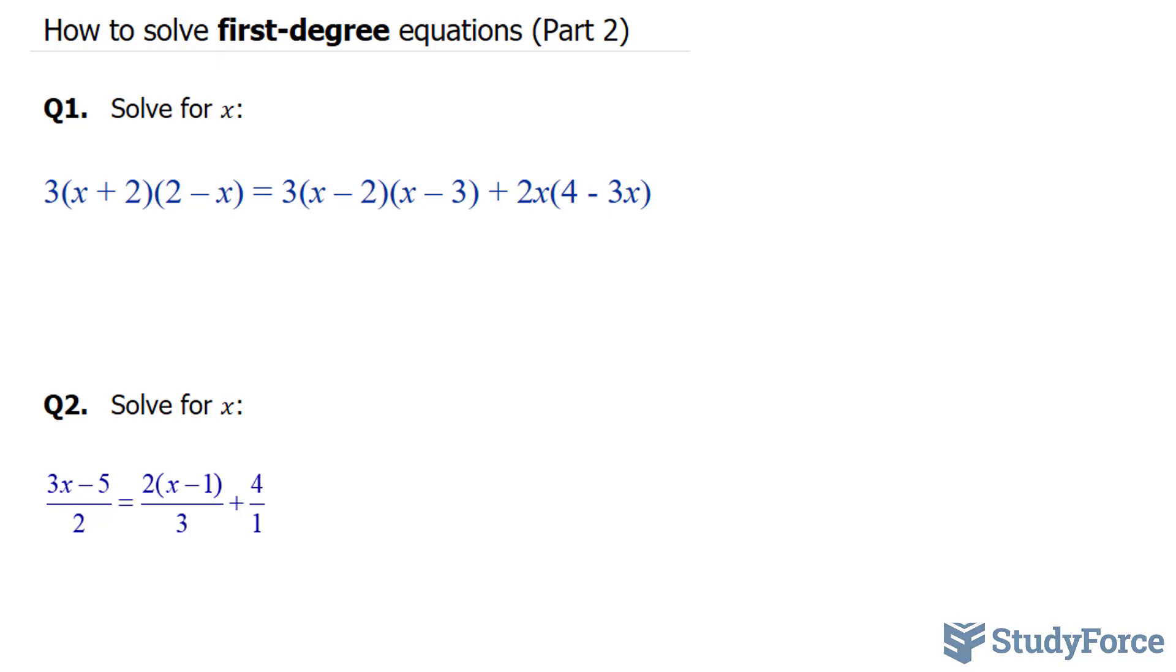In question number one, they want us to solve for x. To accomplish this, the first thing we have to do is multiply this 3 inwards. Let's multiply this 3 times x, and then that 3 times the 2. 3 times x is 3x, and 3 times 2 is 6. Notice that I'm going to put brackets around the 3x plus 6.